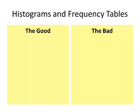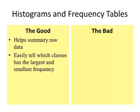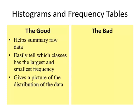So let's summarize histograms and frequency tables. Here's the good things. It helps us summarize raw data. We can easily tell which classes have the largest and the smallest frequency. It gives us a picture of the distribution of the data, and it may help us identify what's called possible outliers. We'll talk more about that in chapter 3.